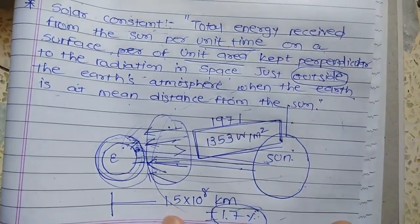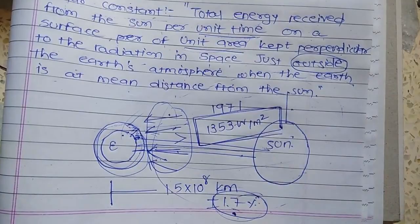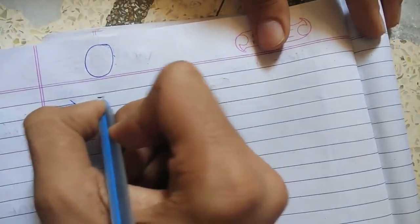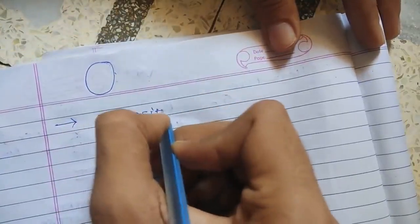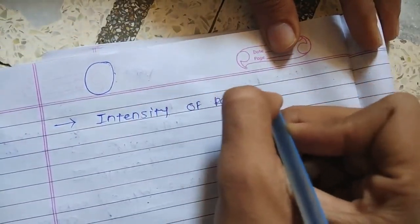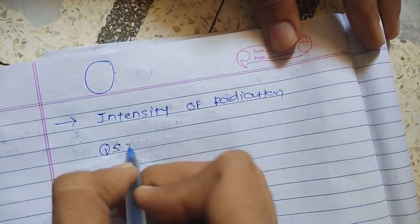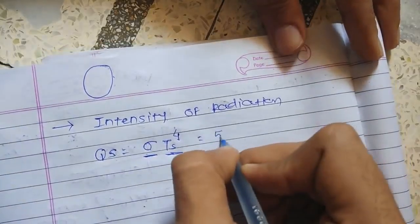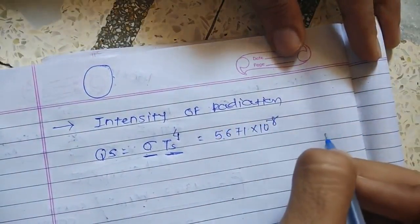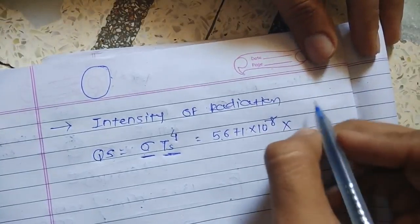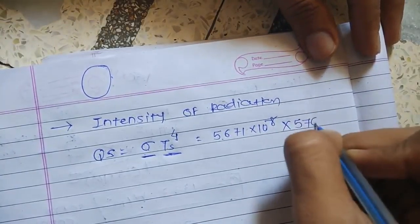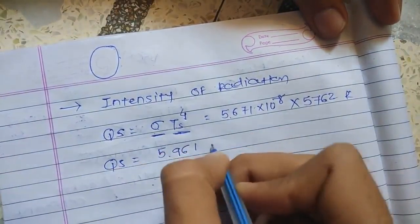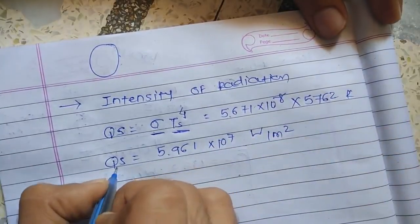Let us see how this value is derived. First, the intensity of radiation from the sun is given by qs = σT⁴, where σ is the Stefan-Boltzmann constant equal to 5.671 × 10⁻⁸ W/m²·K⁴, and the temperature of the sun is taken as 5762 K. Calculating this gives an intensity of 5.961 × 10⁷ Watts per meter square from the sun.